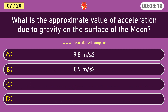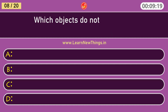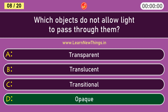What is the approximate value of acceleration due to gravity on the surface of the moon? 1.6 meters per second squared. Which objects do not allow light to pass through them? Opaque.